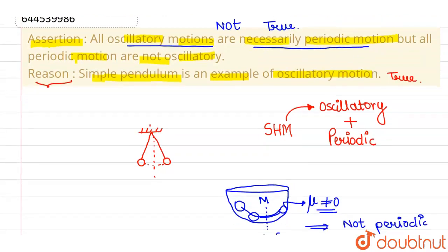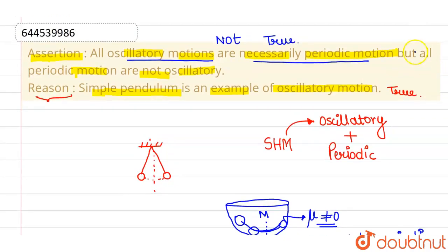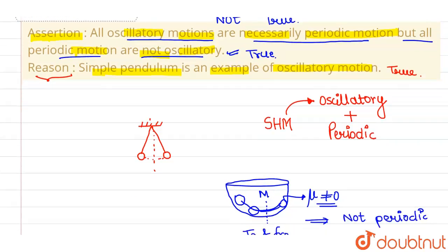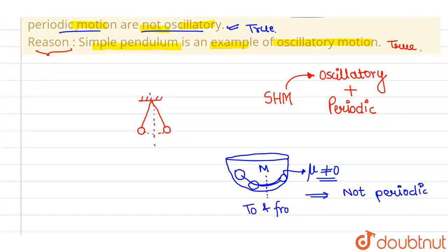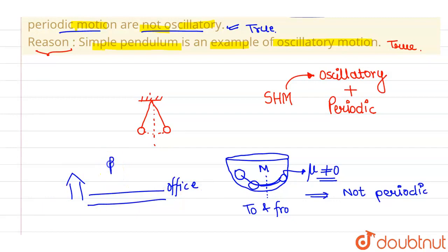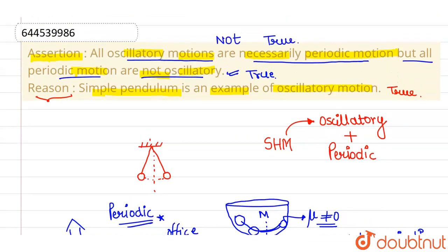All oscillatory motions need not be periodic, so that part of the assertion is wrong. The further statement — all periodic motions are not necessarily oscillatory — is true. For example, if you start from your home, go to the office, and come back, that is a periodic motion because it happens at regular intervals daily. But it is not oscillatory since it is not a to-and-fro motion about a fixed position.